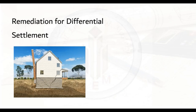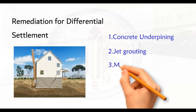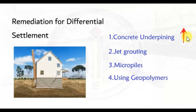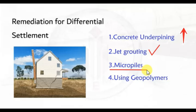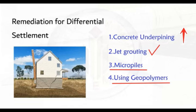Let's look into the remediations for differential settlement. The first is concrete underpinning, which involves raising the settled portion of the foundation to the same level as the rest, done by drilling holes under the foundation and injecting concrete or grout. Jet grouting involves injecting a mixture of water and cement under high pressure into the ground, creating a column of compacted soil to support the structure. Micropiles are small, slender piles driven into the ground to transfer the load to more stable soil. Geopolymer materials can improve soil stability and reinforce the foundation or create a barrier between different soil layers.